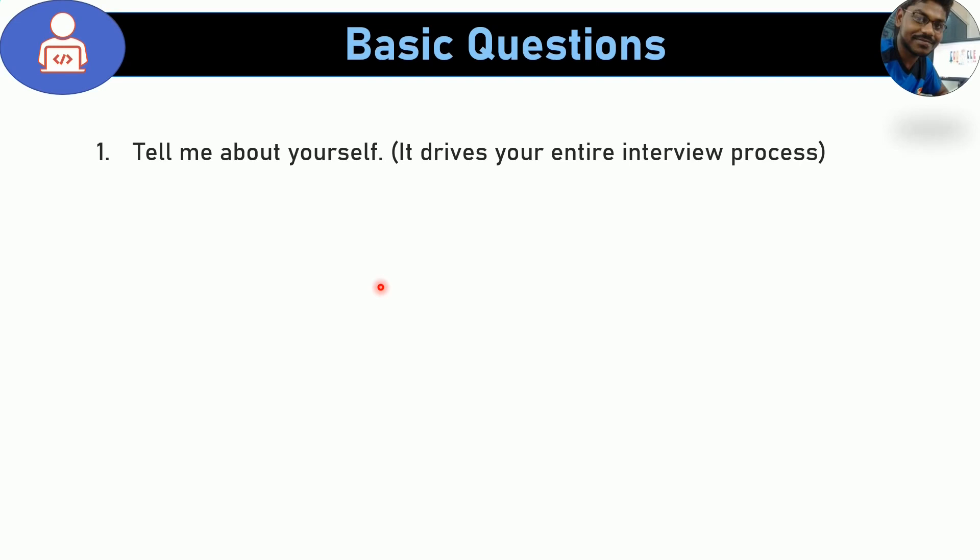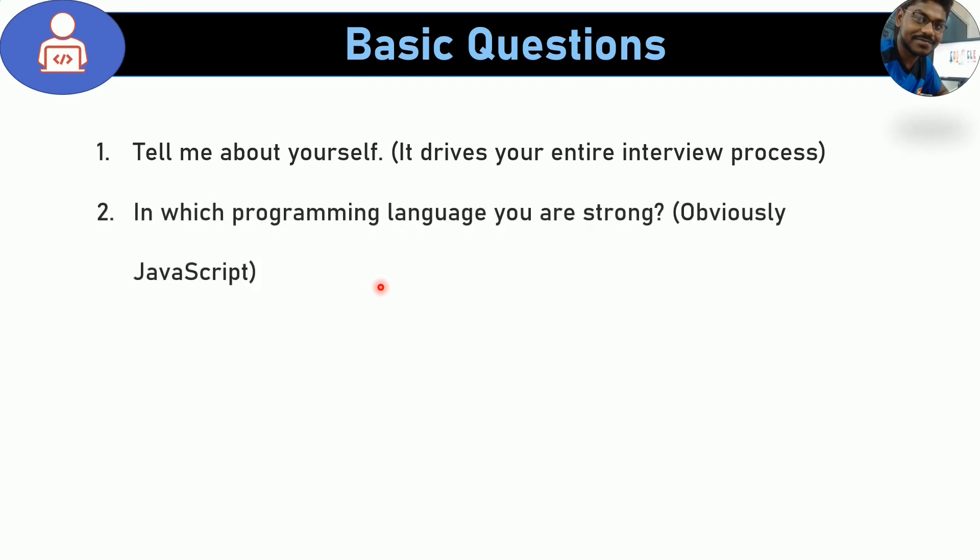The main thing about introducing yourself is that you need to tell them what you do. Remaining personal details — like your hobby, your father, your mother — are not relevant here. Personal information is not needed. Focus on skill-related content. The second thing: mention which programming language you are strong in. We need to apply this in a JavaScript-related role, so mention JavaScript.